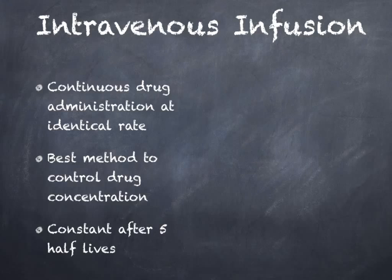When you're working to achieve a steady state condition, you want to minimize the dosing interval and give that dose in exactly the same amount at each interval. The best way to do this is with an intravenous infusion or IV, which allows you to control the amount of drug being given exactly and give it continuously rather than having breaks. After about five half-lives, the drug reaches its steady state concentration.